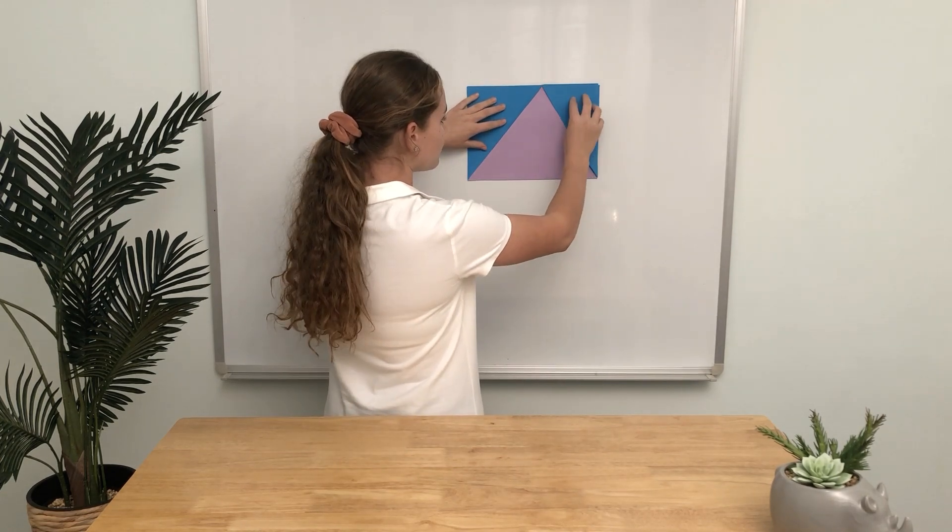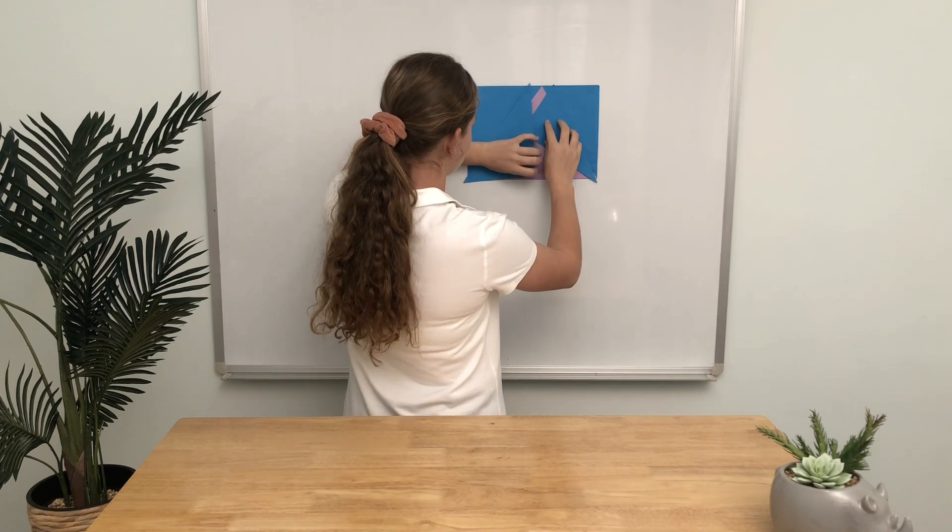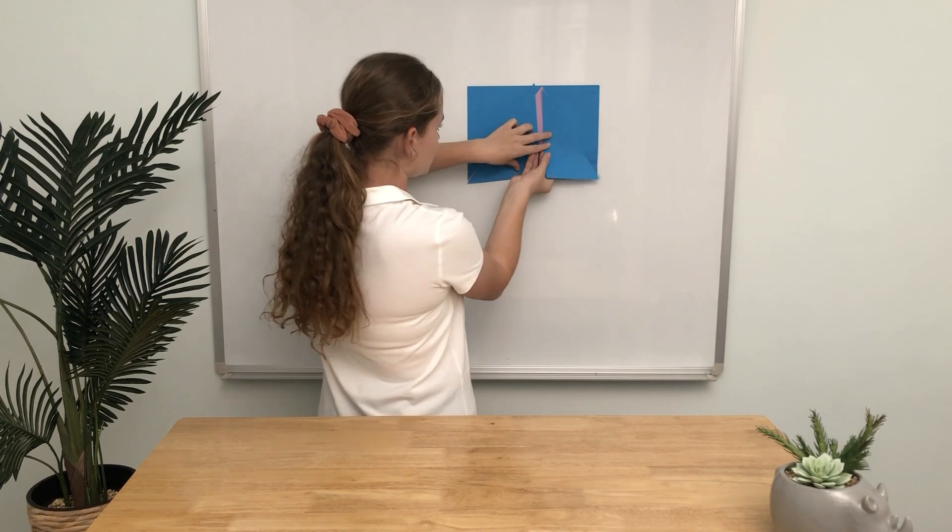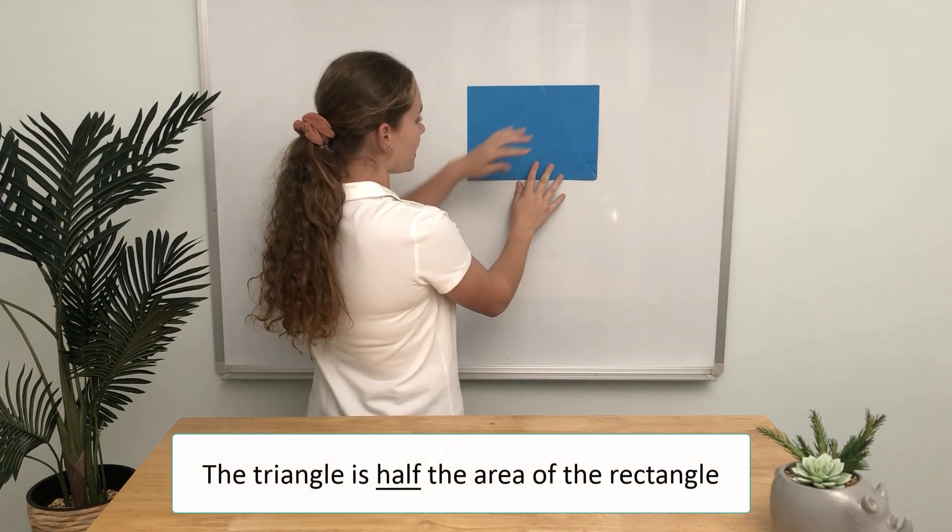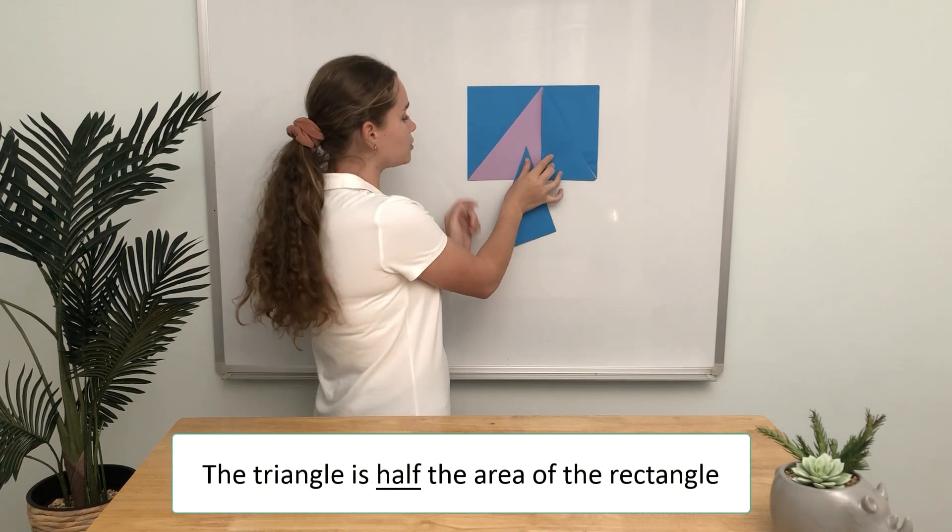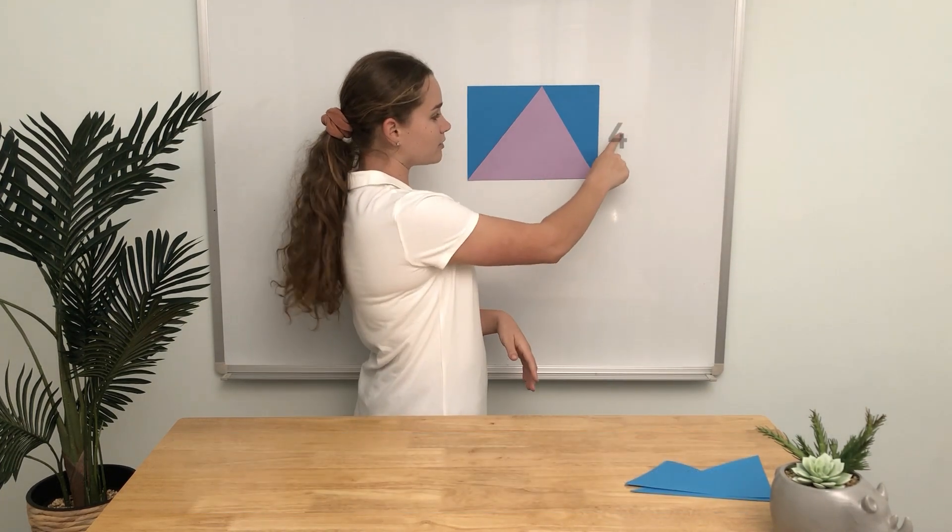So that covers the rectangle. We flip these over, you can see that it covers the triangle. So now we know that the triangle is half the size of the rectangle.